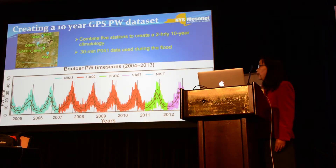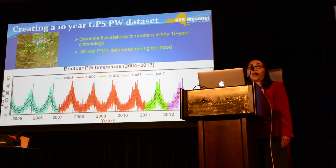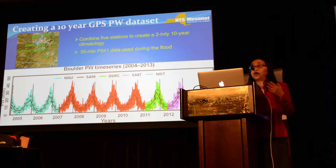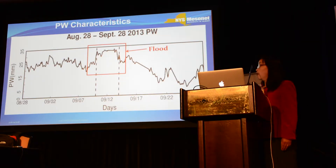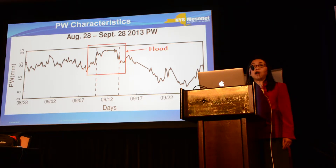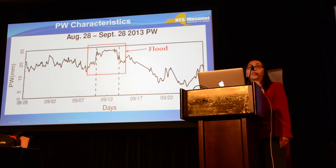First, we combined the GPS precipitable water data from six stations in this area into a 10-year climatology of two-hourly PW data, since every station was only available for a period of time. Hannah did a lot of work to combine and match them spatially and temporally to create this climatology. Zooming in for one month from August 28th to September 28th: before the flood, you see high water vapor — that's the extension of the monsoon from late August to early September, an above-normal condition. Then you have the flooding event. Afterwards, the water vapor decreases dramatically and gets back to normal seasonal variability.